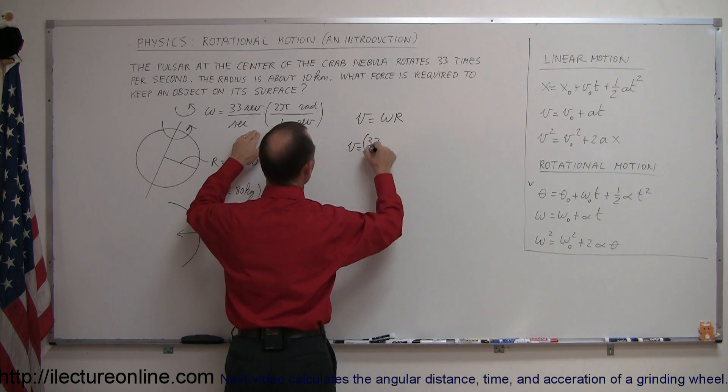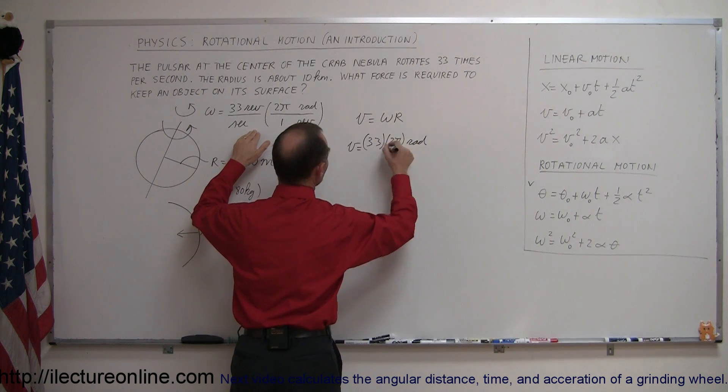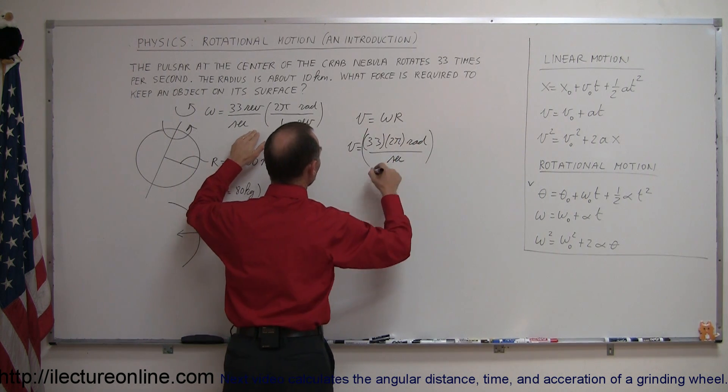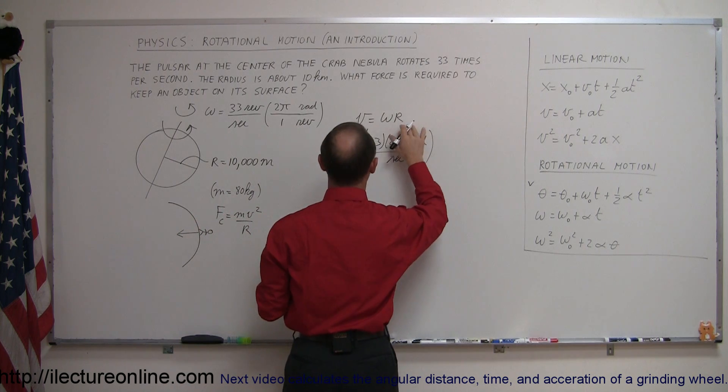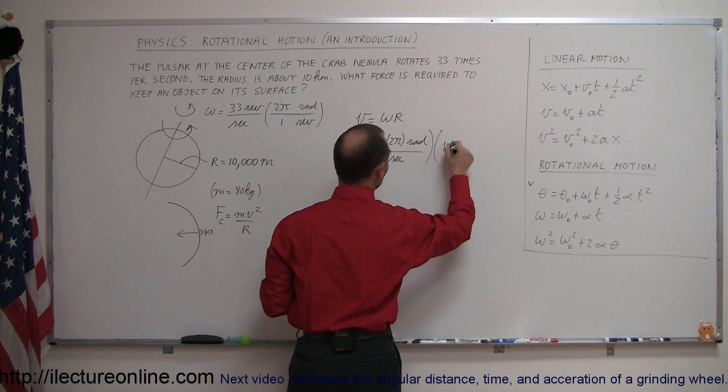We have velocity is equal to omega, which is 33 times 2π, that's radians per second, and we're going to now convert that to tangential velocity by multiplying times r, and the radius is 10,000 meters.